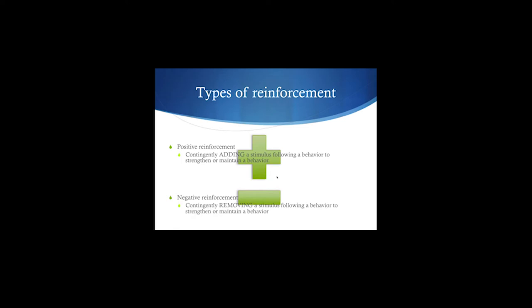Negative reinforcement is contingently removing a stimulus following a behavior to strengthen or maintain the behavior. The only difference between positive and negative reinforcement is adding or removing. Always, always, always — reinforcement strengthens a behavior. You cannot use reinforcement to remove a behavior. Reinforcement will always strengthen a particular behavior. We're thinking about molar behavior here — like flipping a light switch, where any one of those behaviors would be reinforced by the outcome of the light actually coming on.